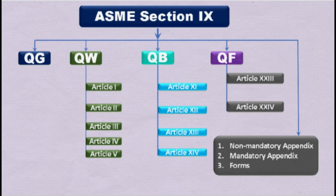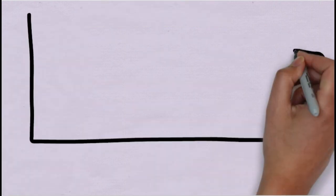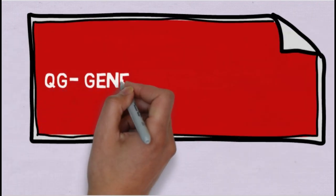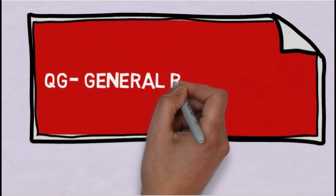The SWPS — also known as Standard Welding Procedure Specifications — are given in Article 5. Apart from the four main parts, ASME Section 9 includes non-mandatory appendixes, mandatory appendixes, and suggested forms. Let us now start the QG clause for General Requirements.